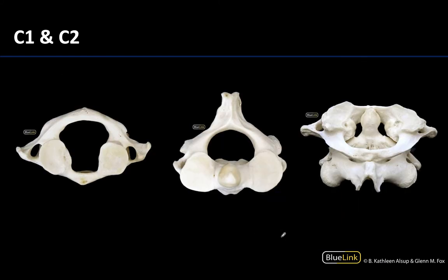Now let's talk about a few special vertebrae — ones that are very unique in presentation or have specific clinical significance. We're looking at C1, or the atlas, and C2, or the axis, and their articulation. C1 is the bone that articulates with the skull via large processes that articulate with the occipital condyles. It is very distinctly ring-shaped, with no spinous process and no body. Think of Atlas from Greek mythology bearing the weight of the world — C1 is bearing the weight of the skull.